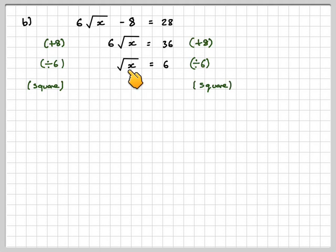The opposite of the square root is to square. So if you square the square root, you're just left with x. And if you square 6, you get 36, which is the final answer.